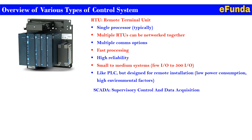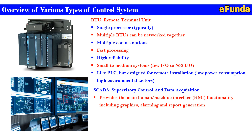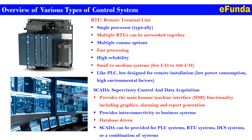The next system is the SCADA system, Supervisory Control and Data Acquisition. One can refer to the picture to see the setup and how the systems are architected with various multiple communication and monitoring options. SCADA provides the main Human Machine Interface (HMI) functionality, which includes graphics, alarming, and report generation. It also provides interconnectivity to the business system and can be implemented for PLC, RTU, DCS, or a combination of systems.